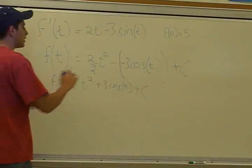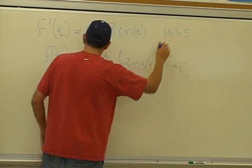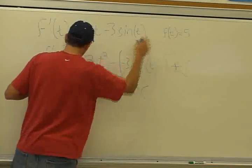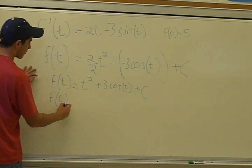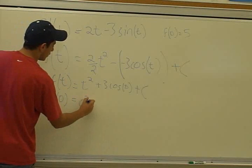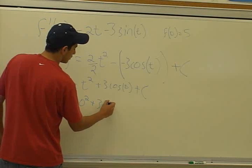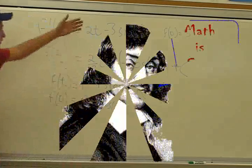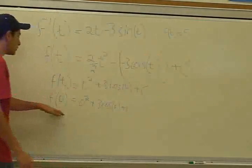Alright, and since they give us this point right here, f of 0 equals 5. And this is f of t. So this matches perfect. So we can just take that 0 and plug it into the equation. So f of 0 would equal 0 squared plus 3 cosine of 0 plus c. So all we did is plug in the 0 from the information they gave us right here.